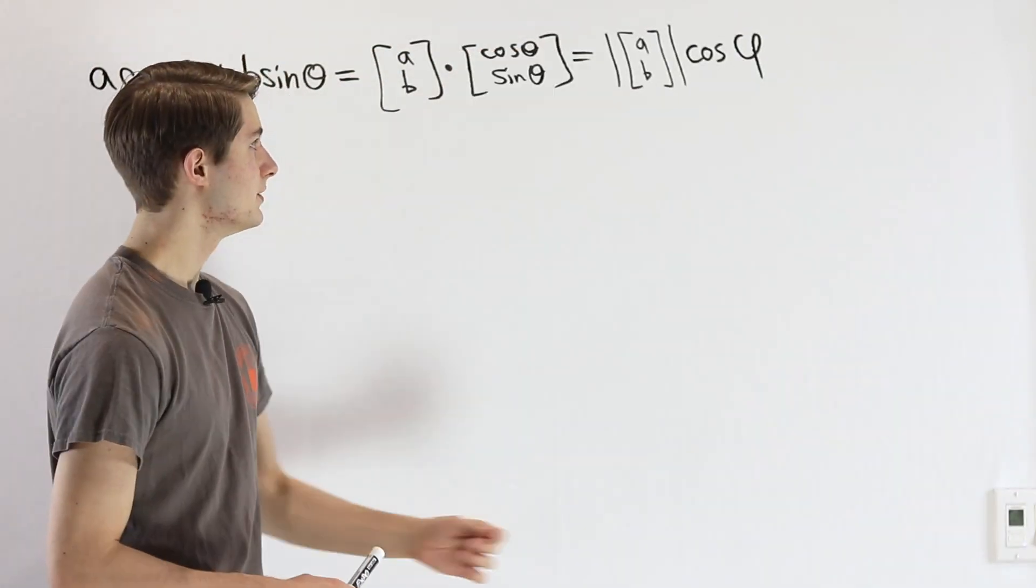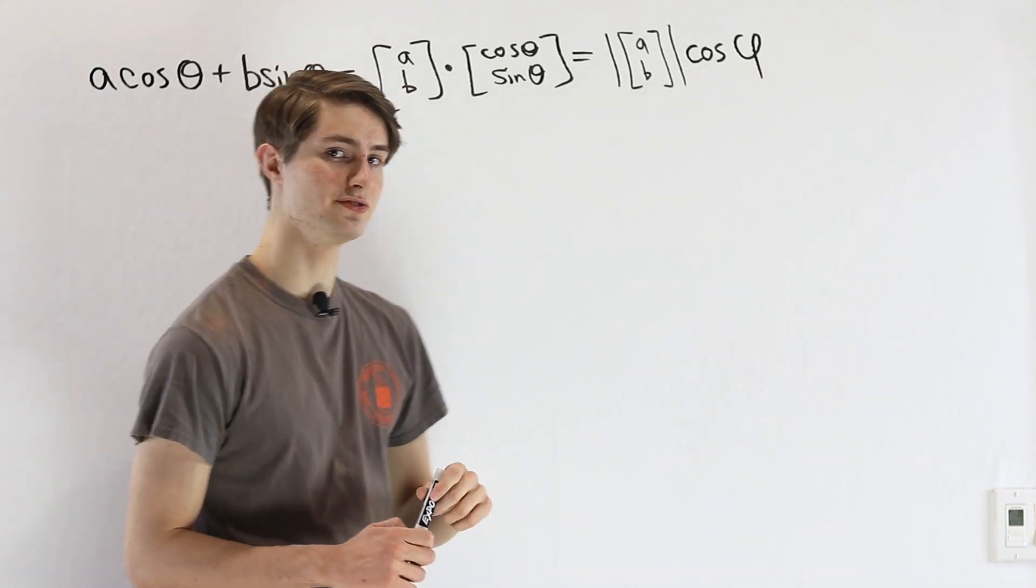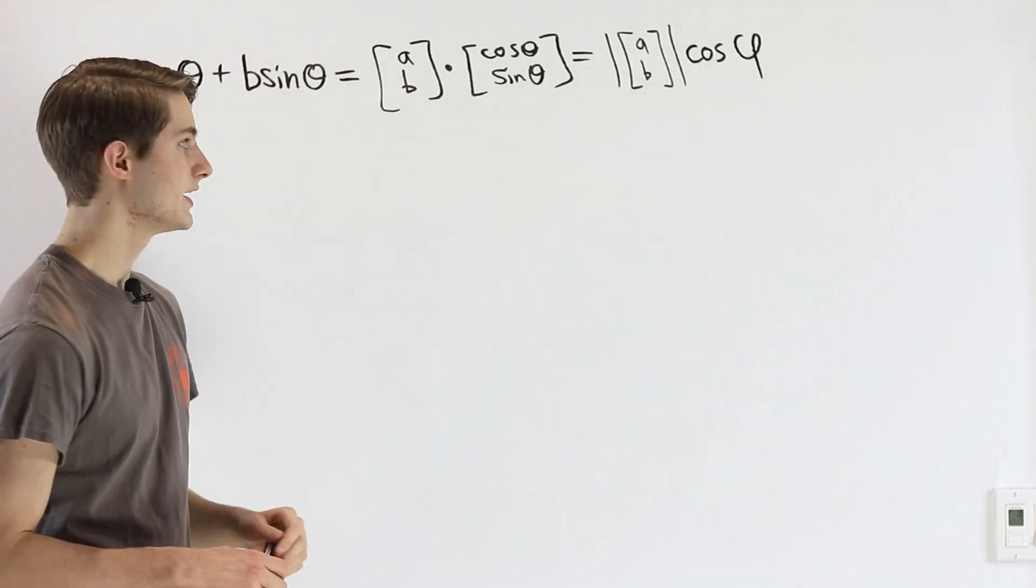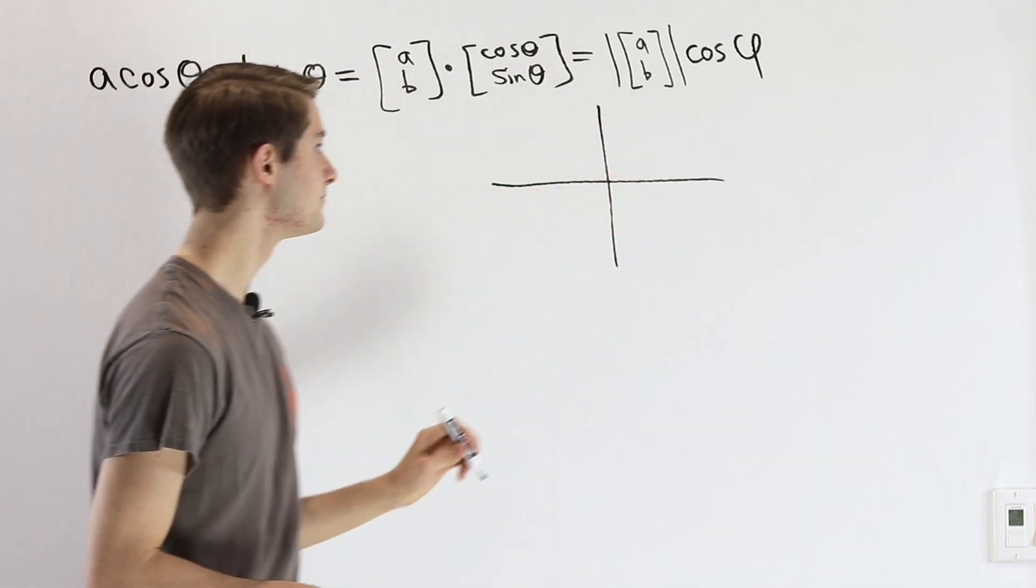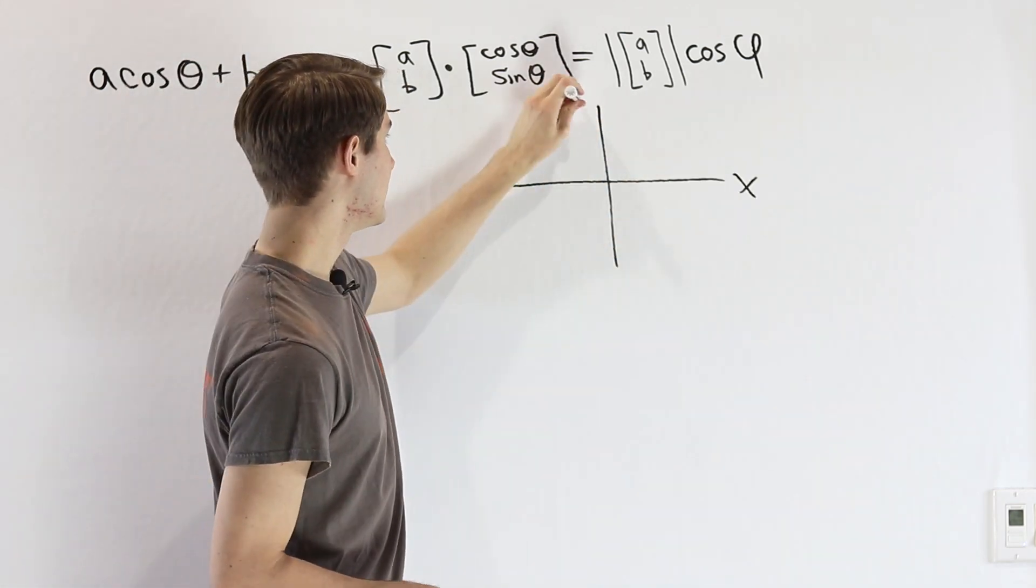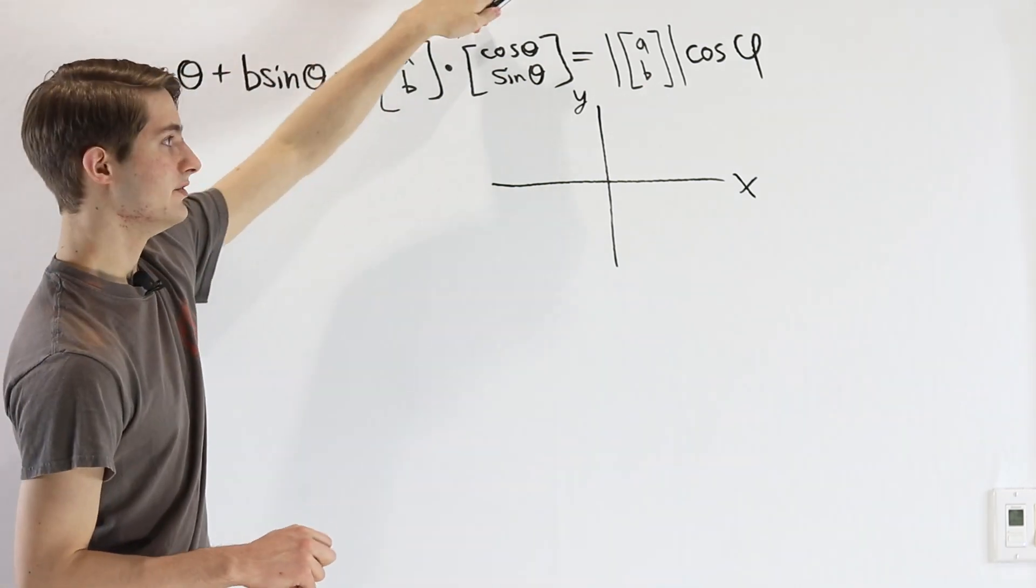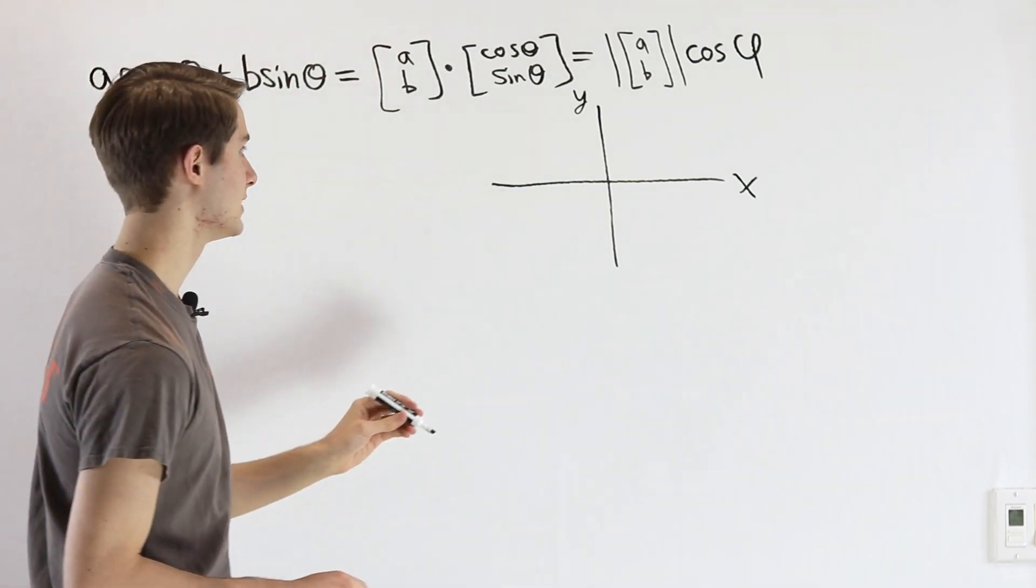The question now is how do we determine this angle, which I've denoted as φ? In order to figure that out, we're going to take a look at what these vectors would be graphically. If we have our x and y axes here, we can look at how these two vectors will be mapped into the xy plane.